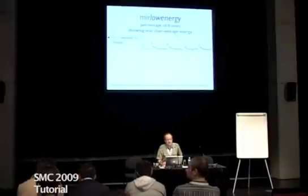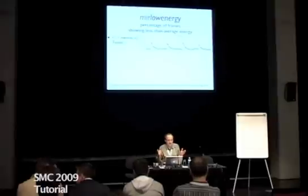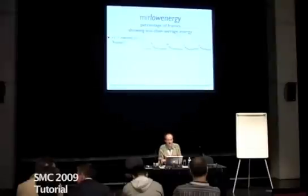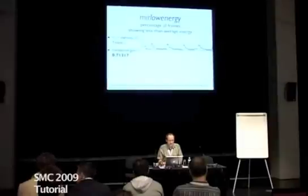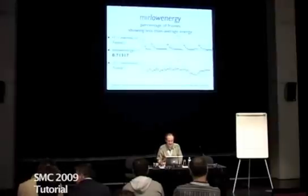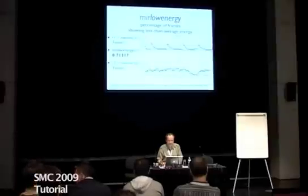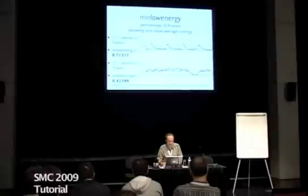From this RMS energy, you can estimate how much, within a given musical sequence, the ratio of frames with high energy versus frames with low energy. For this particular example, most of the samples are below the average energy, so the low energy rate is high. Whereas for this other example, most of the frames are over the average energy, so the low energy rate is low. This has been used for genre classification.